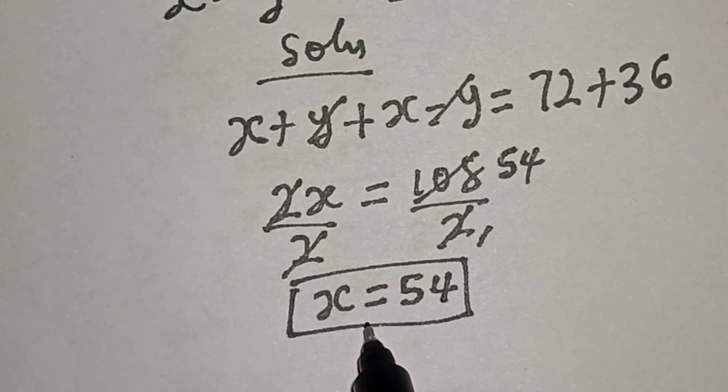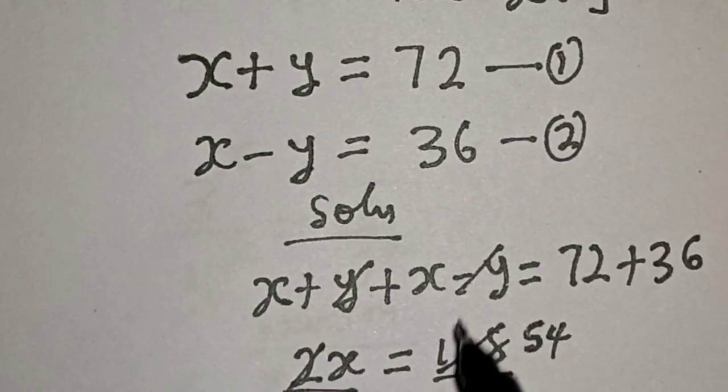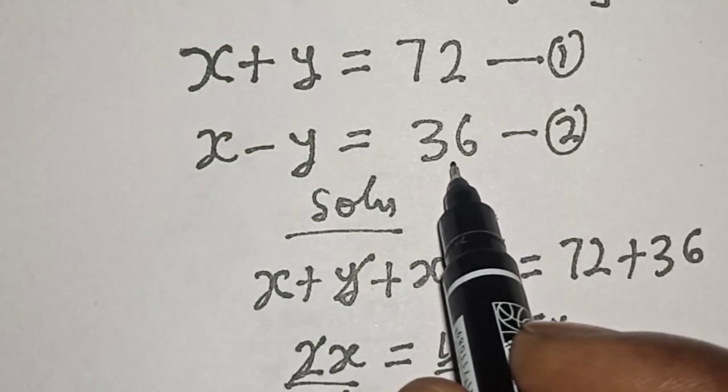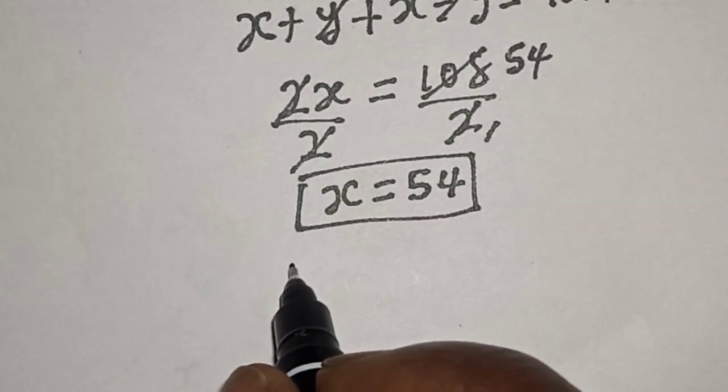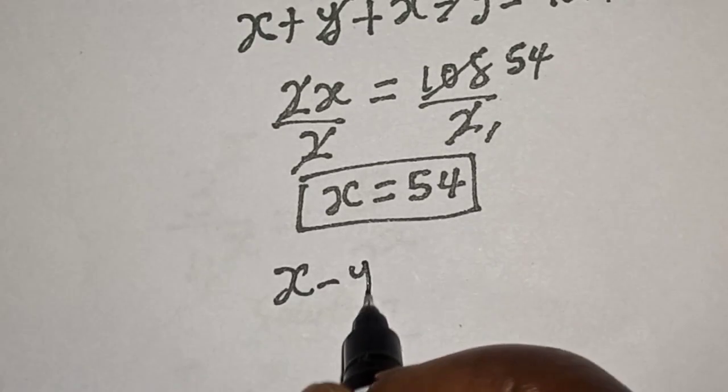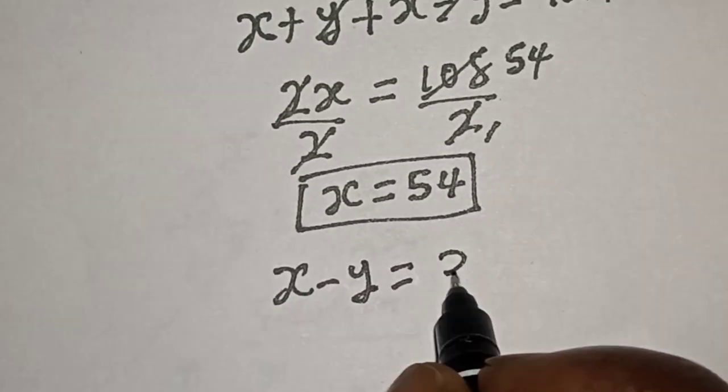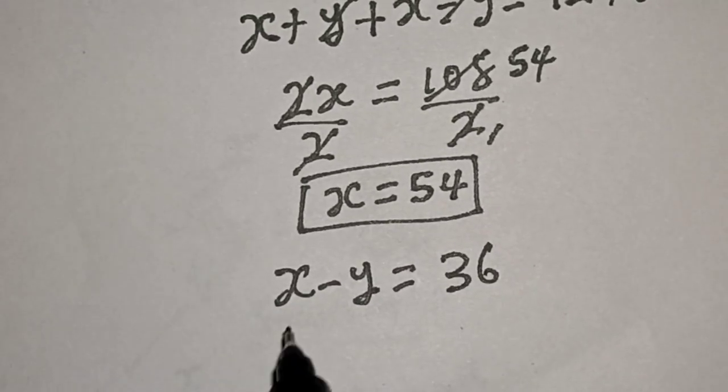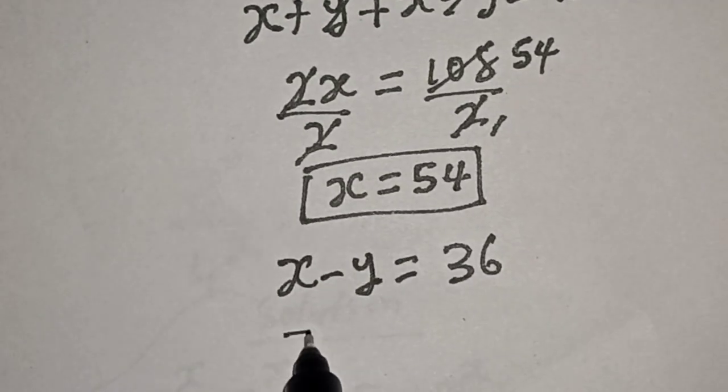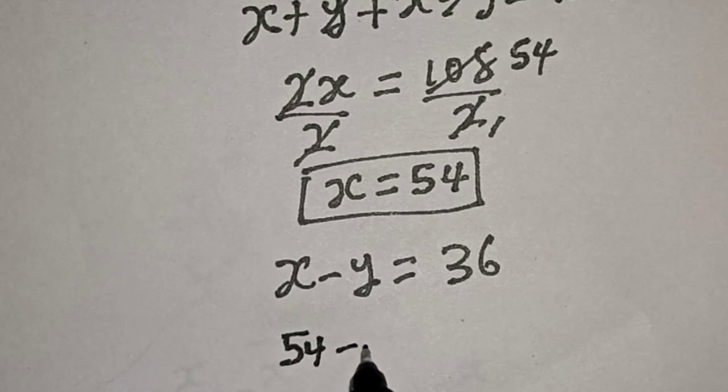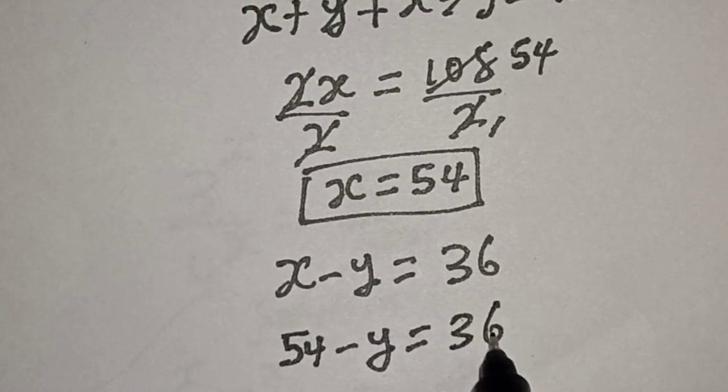substitute for x in either equation 1 or equation 2. Let's use equation 2. Equation 2 is x minus y equals 36. x equals 54, so 54 minus y equals 36.